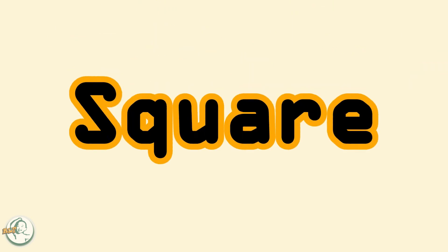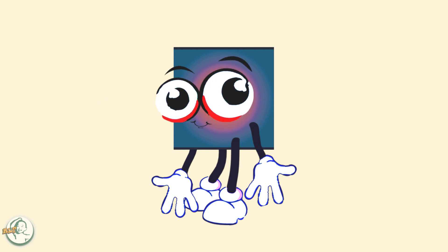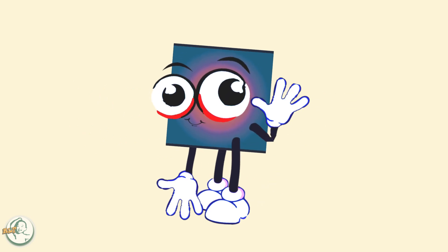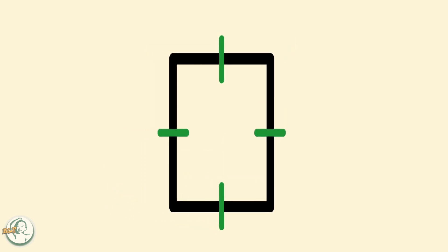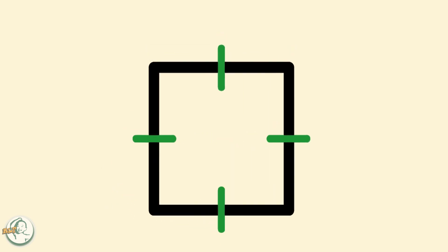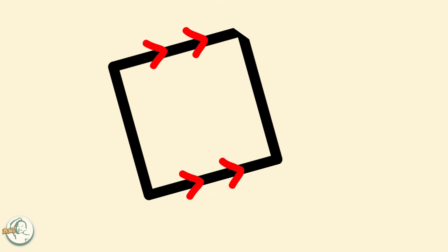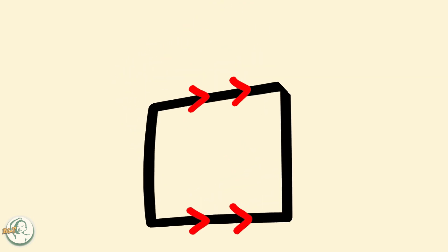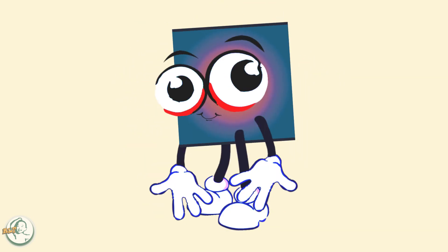Have you ever wondered what a square is and what makes it unique? A square is a two-dimensional shape that has some properties that set it apart from other shapes. A square has four straight sides of equal length and four right angles. The sides of the square are also parallel to each other, which means they never intersect or cross each other.